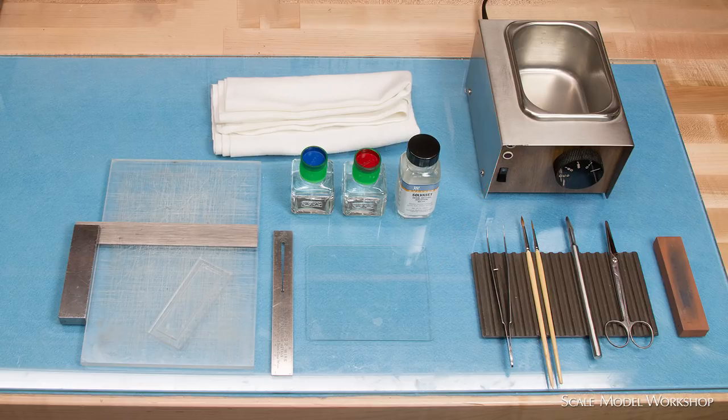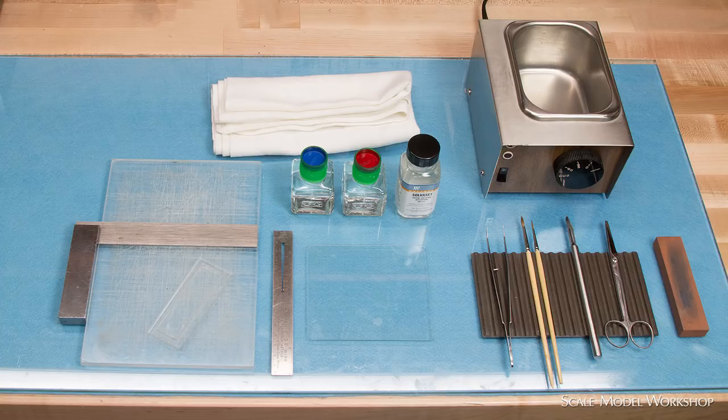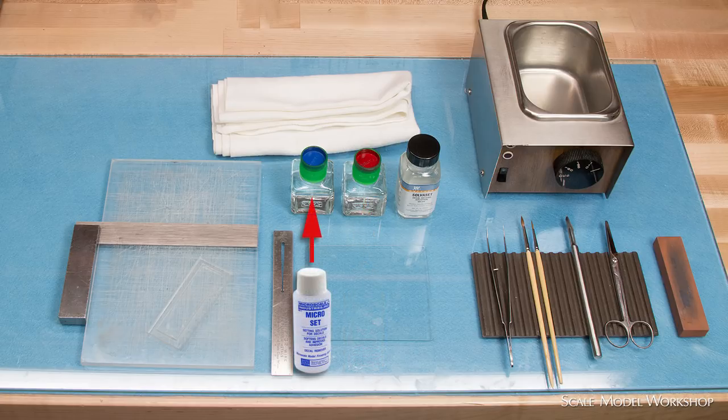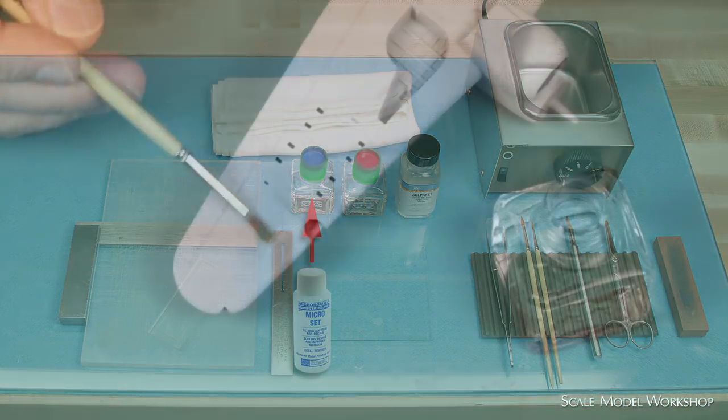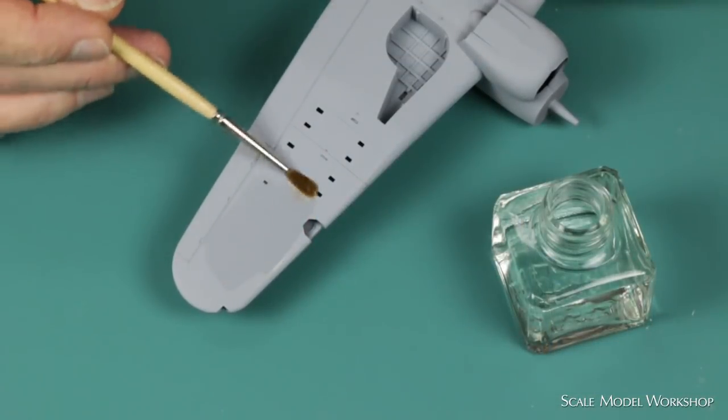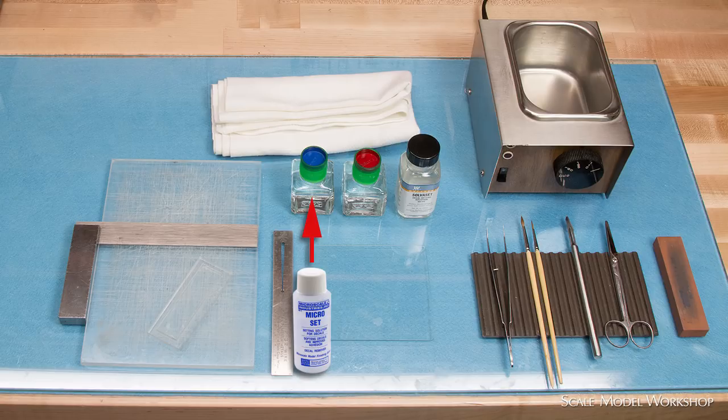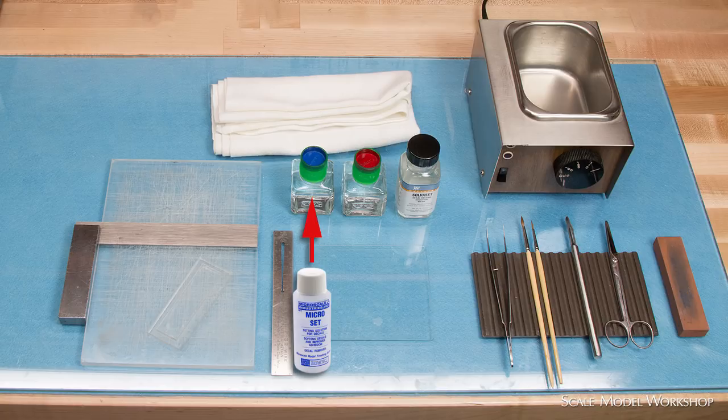Decal application requires the use of setting solutions. To prevent spills, I've transferred several of the solutions to glass bottles. The blue label is Microscale's Microset. This solution is applied to the surface of the model. Although the Microset is described as mildly softening the decal, its main function seems to be as a surfactant for reducing the surface tension.